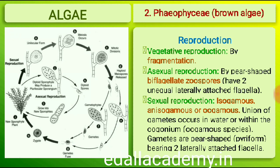The gametes are pyriform, pear-shaped, and bear two laterally attached flagella. The common forms are Ectocarpus, Dictyota, Laminaria, Sargassum and Fucus.